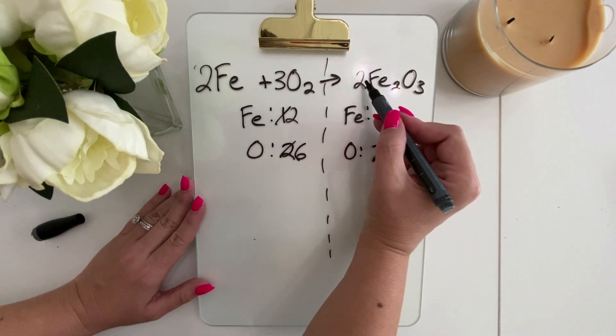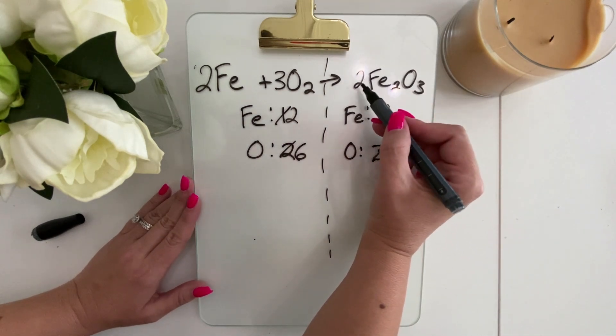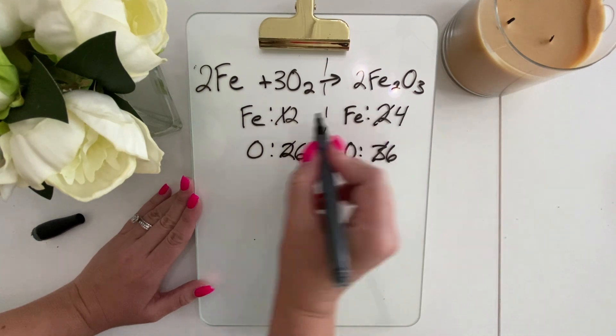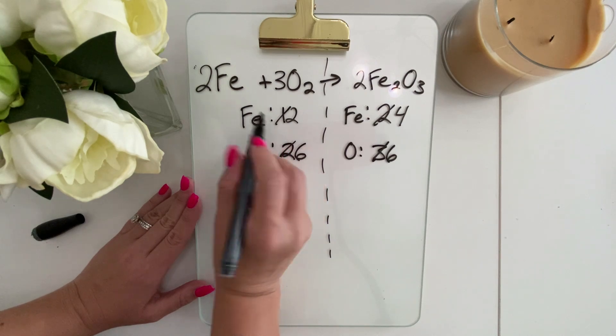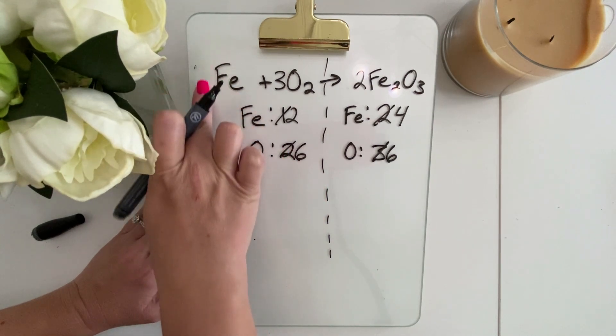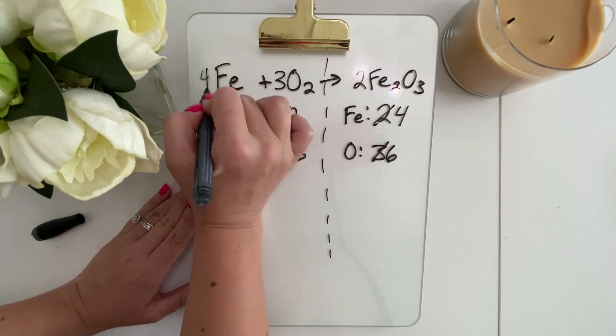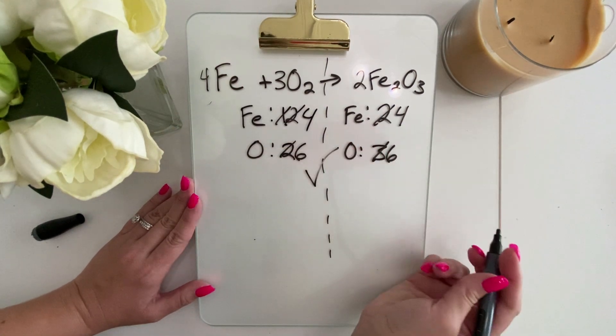However, this has also altered our Fe, our iron. So now we have four iron instead. So now we need to go back over to our reactant side and correct that. So instead of putting the two here, we now need to put a four so that we can be balanced and done.